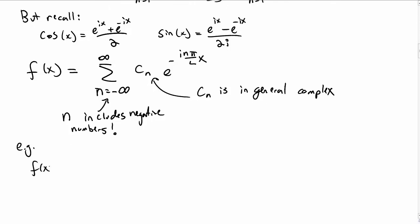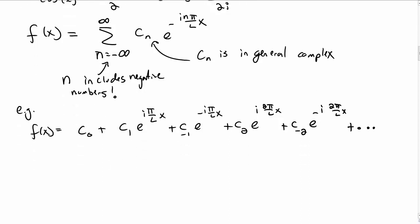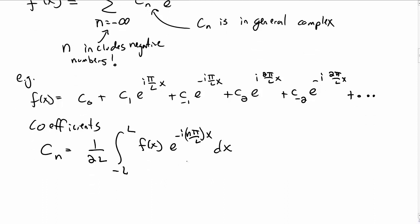So, for instance, the first few terms in this series would be c0 plus c1 e to the i pi over l, x, c sub minus 1 e to the minus i pi over l, x, c sub 2 e to the 2 pi over l, x times i, and c sub minus 2 e to the minus i 2 pi over l, x, etc. So, you get all of the positive and negative terms in the exponentials.